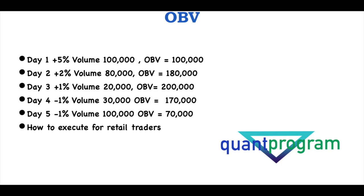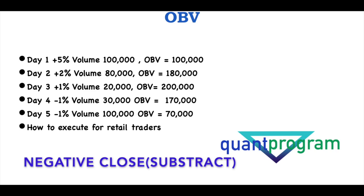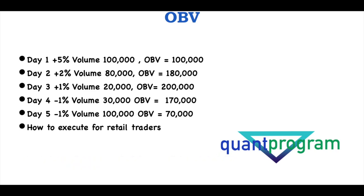Day 3 is again plus 1%, also a positive close. The volume is 20,000, so we add 20,000 to 180,000 to get 200,000. Now Day 4 is a negative day — minus 1% — and the volume is 30,000. Because it's a negative close, we subtract: from 200,000 we subtract 30,000 to get 170,000. Day 5 is again a negative close of minus 1%, volume is 100,000. So we subtract 100,000 from 170,000 to get 70,000.